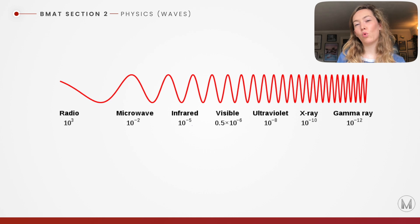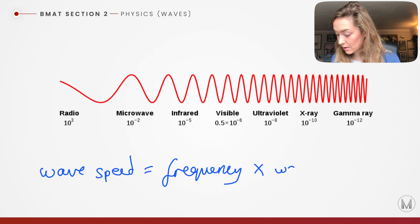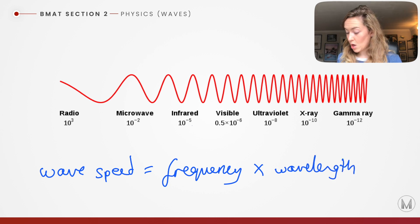An equation that's really important to remember here is wave speed equals frequency times wavelength. Electromagnetic waves that have got a long wavelength will have a low frequency and those with a higher wavelength will have a higher frequency. Their speed, the whole time, remains constant. It is the speed of light.